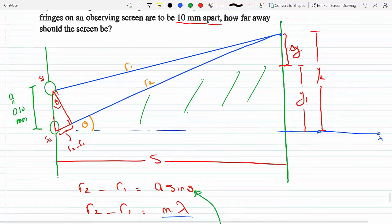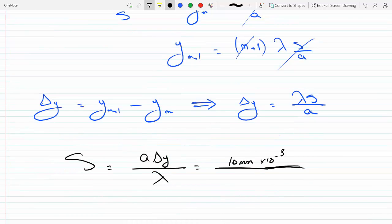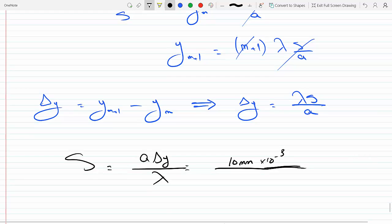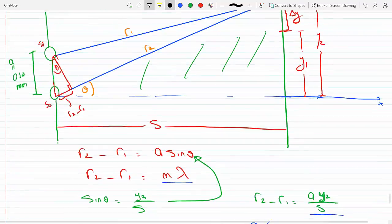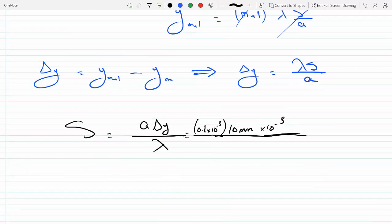a is 0.1 millimeters, so 0.1 times 10⁻³. Delta y is 10 millimeters, multiply by 10⁻³. And λ is 487.99 nm—changing from nanometers to meters, multiply by 10⁻⁹. Plugging this into the calculator, we get the distance from the screen to be...